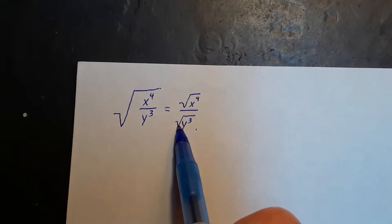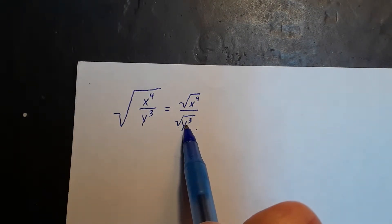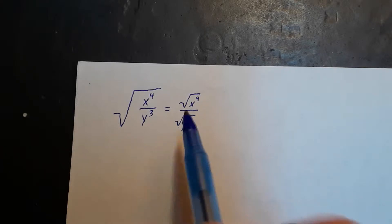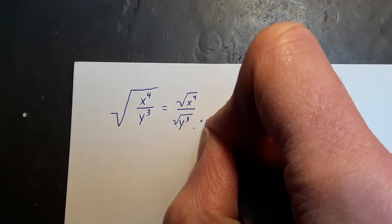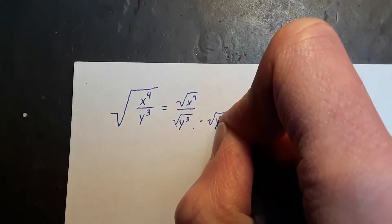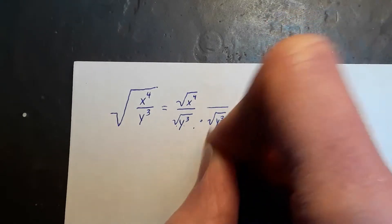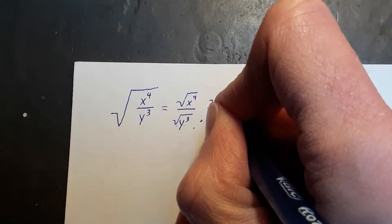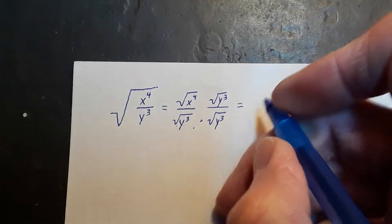Since this is the square root here that we have acting on y cubed, we can multiply by another one of these. And if we do this on the denominator, we're doing it on the numerator so that we have equivalent fractions.